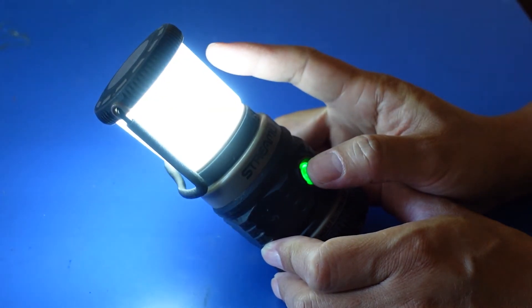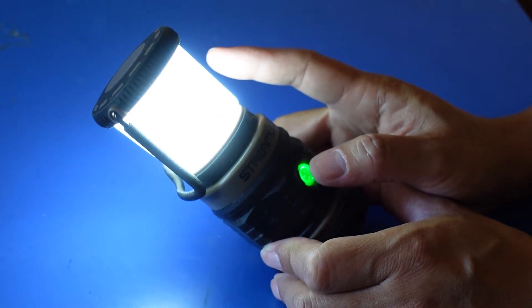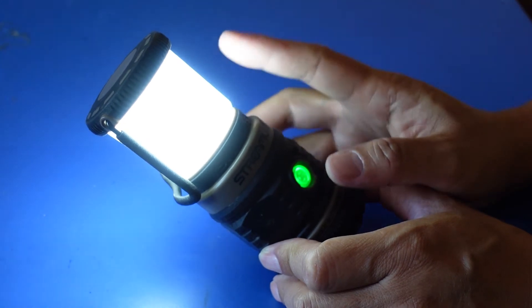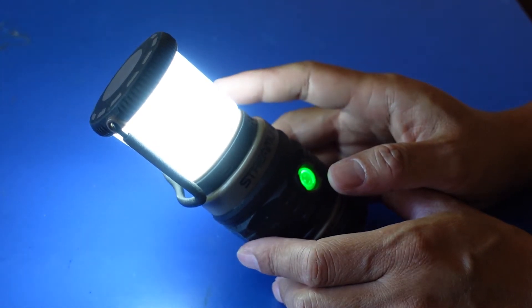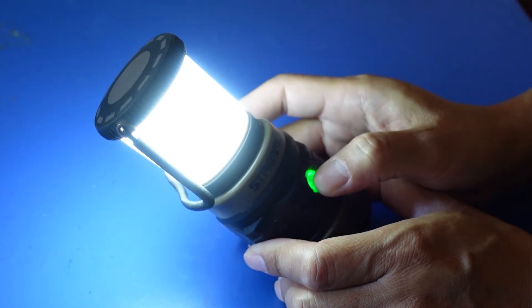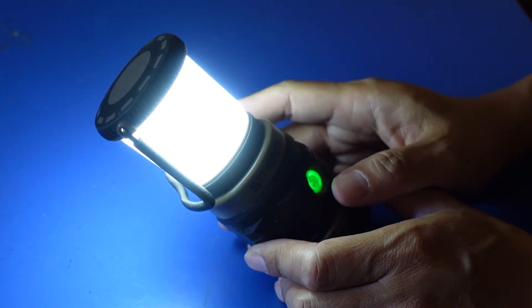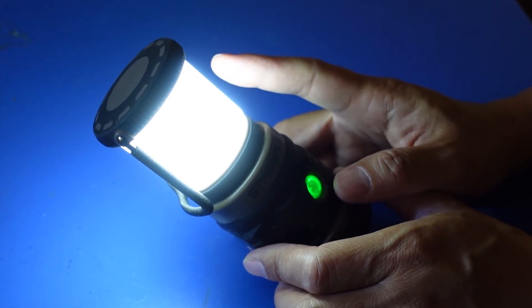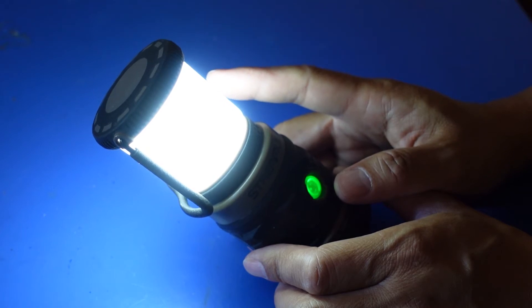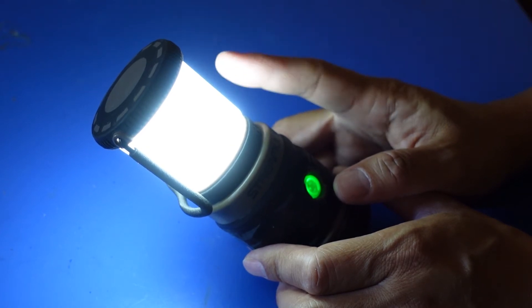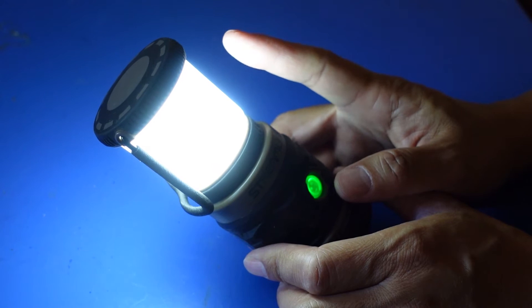On the medium setting, you get 100 lumens. The battery will last 15 hours. On the high setting, it outputs 200 lumens. The battery will last for 7 hours.